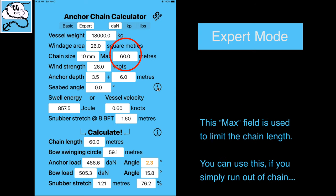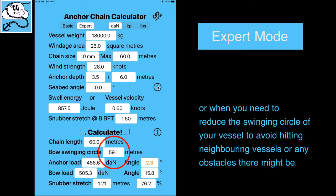This max field is used to limit the chain length. You can use this if you've simply run out of chain or when you need to reduce the swinging circle of your vessel to avoid hitting neighboring vessels or any obstacles there might be.